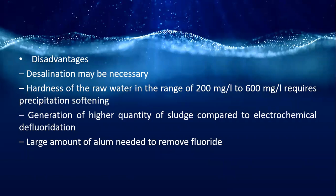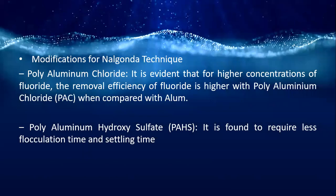Disadvantages include: desalination may be necessary; raw water hardness in the range of 200–600 mg/L requires precipitation softening; higher quantity of sludge generated compared to electromechanical defluoridation; and large amounts of alum are needed. Modifications include using polyaluminium chloride (PAC), which showed higher fluoride removal efficiency than alum, and polyaluminium hydroxy sulfate, which requires less flocculation and settling time.